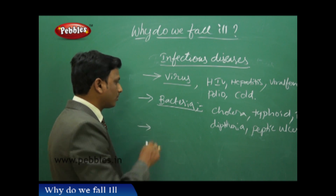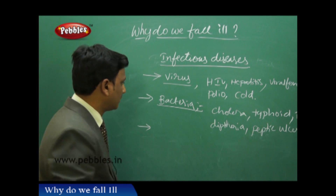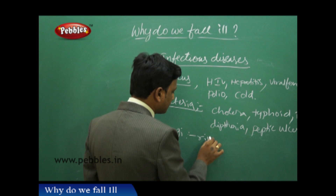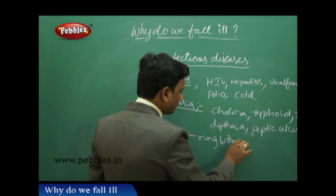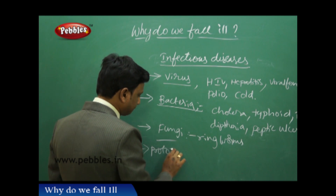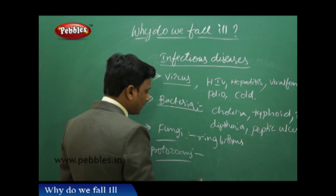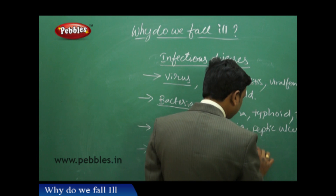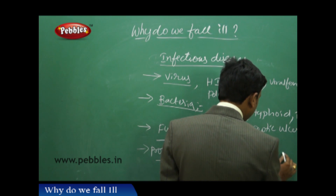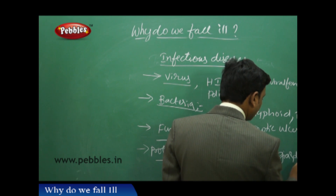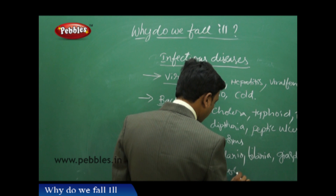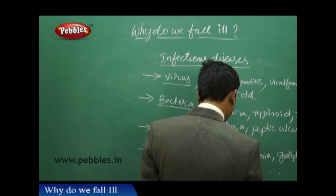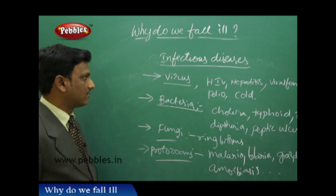Bacterial diseases can be controlled using antibiotics. Fungi cause certain diseases like ringworm and other skin infections. Protozoans cause diseases like malaria, filaria, giardiasis, and amoebiasis. These are the different types of diseases caused by different microorganisms.